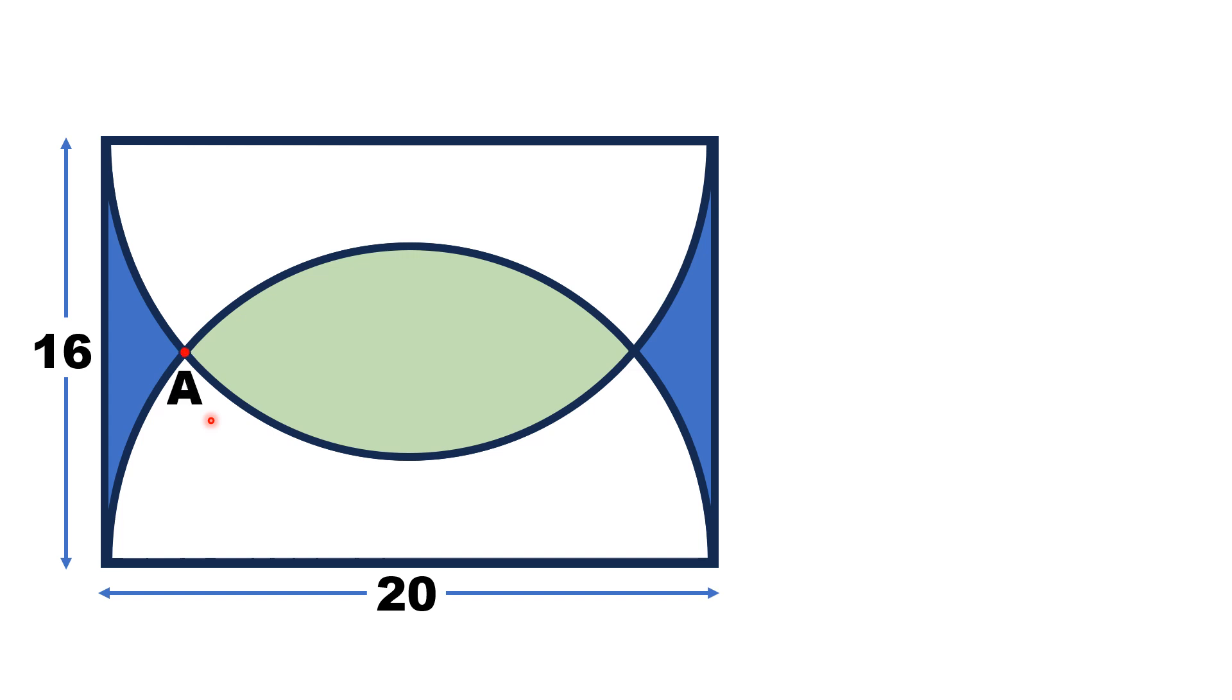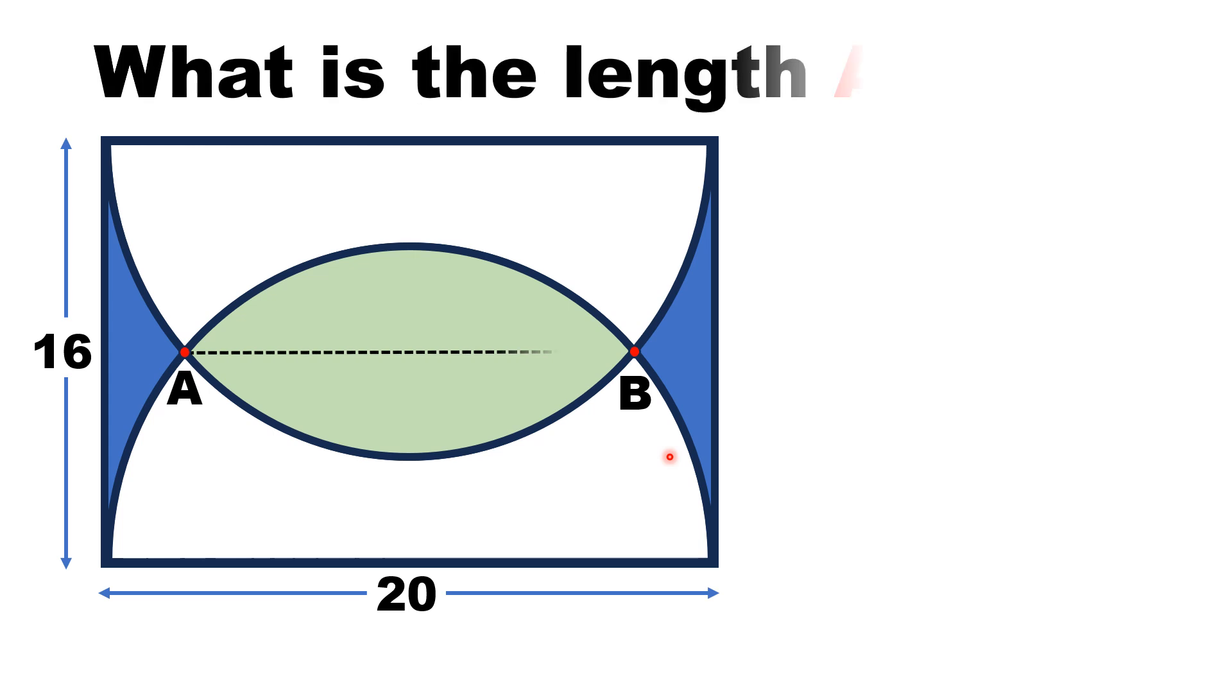The first point is A and the other point is B. By this limited data, we have to find the length AB. This length AB we have to calculate.